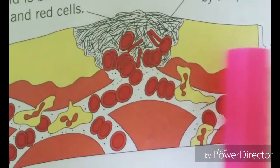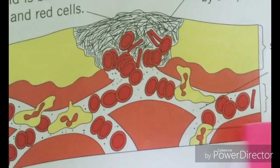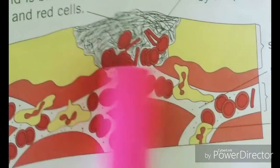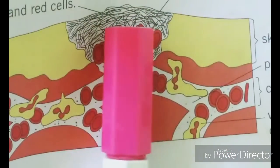These yellow ones are the white blood cells. Basically, when there is a cut, fibers are produced by the platelets in our skin.